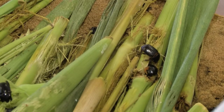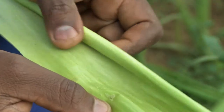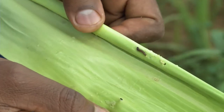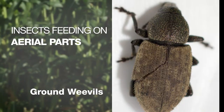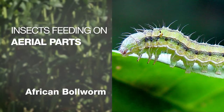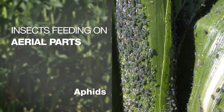Different insects feed on different parts of the maize plant, often on more than one part. Examples include ground weevils feeding on the leaves, African bollworm feeding on leaves and cobs, and maize leafhoppers and aphids feeding on the sap in the stem of the plant.